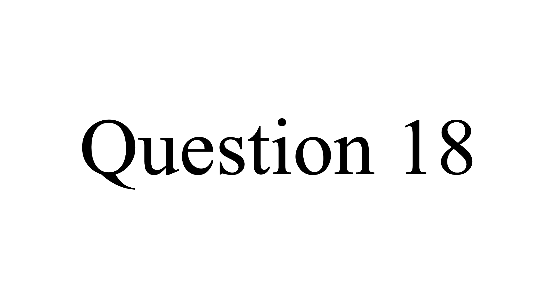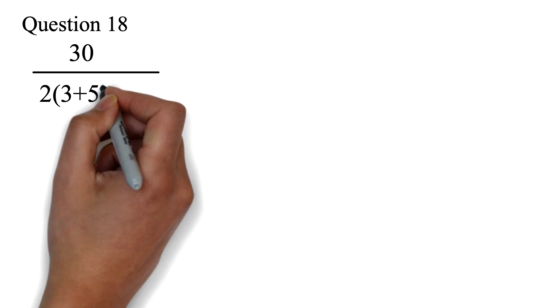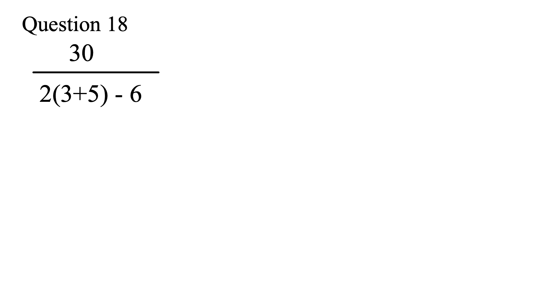Question 18. We are supposed to calculate this without using a calculator. 30 over 2, parentheses, 3 plus 5, minus 6 equals. I want you to try this. We haven't exactly done this. In order to get this right, you have to apply what I call implied parentheses.